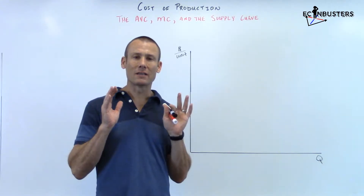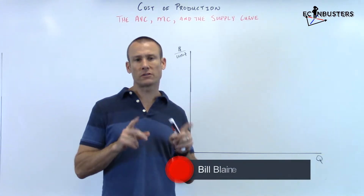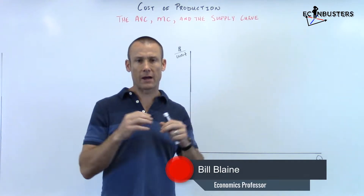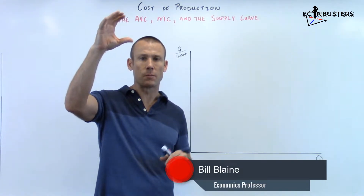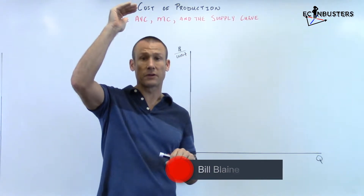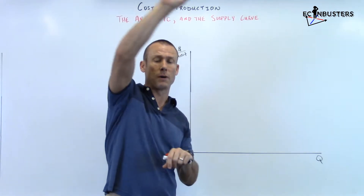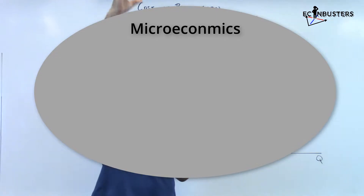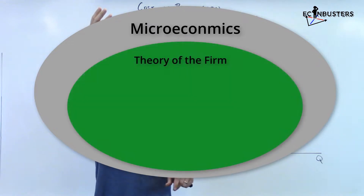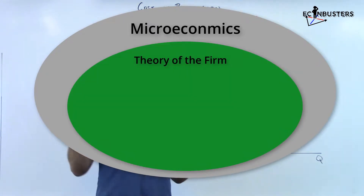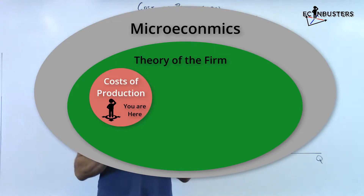Welcome back. We are on our last video of the unit Cost of Production. We're doing this thing called Theory of the Firm, which is a major subsection of microeconomics. Inside of microeconomics, a major subsection is called Theory of the Firm — how firms make decisions. Inside that subsection are a lot of units, and our first unit is Cost of Production. This is our last video in that series.